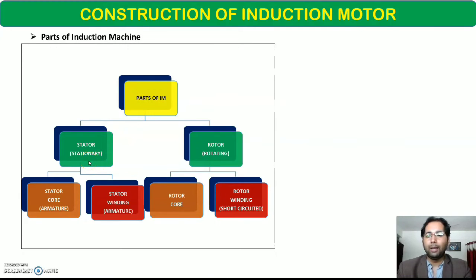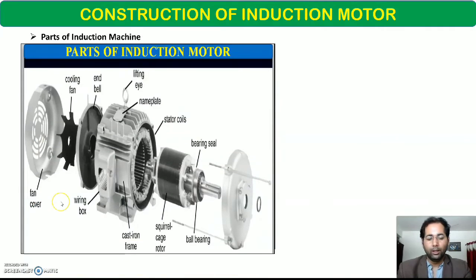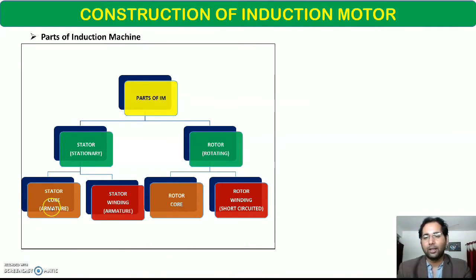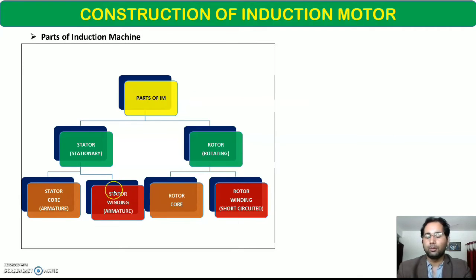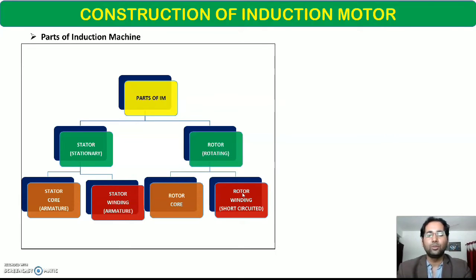मैं induction motor के parts को detail में बताऊं: stator stationary part है जिसके दो components होंगे — stator का core और दूसरा component होगा stator की winding. Stator core को हम armature भी बोल सकते हैं, लेकिन induction motor के case में हम उसको stator core ही बोलेंगे. Rotor के भी दो important parts होंगे — पहला rotor core और rotor winding. Rotor के case में rotor की winding permanently short-circuited होती है. According to the arrangement, rotor दो types का होता है: पहला squirrel cage, as well as slip ring induction motor.